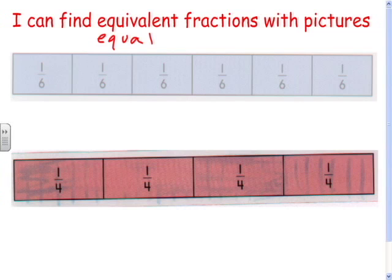So let's take these two for example. These are sixths because they are cut into six equal pieces. The bottom one here is fourths or quarters because they're divided into four equal pieces.